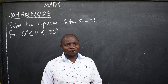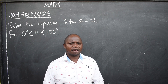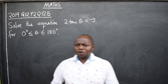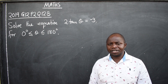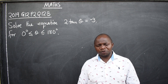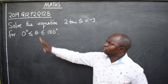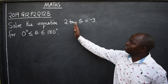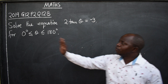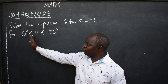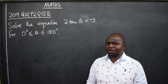Hi friends, hope you are well. This is mathematics. In this lesson, we want to look at this question from 2019, grade 12, paper 2, question number 12b. Solve the equation: 2 tan theta is equal to negative 3, for 0 degrees less than or equal to theta less than or equal to 180 degrees.